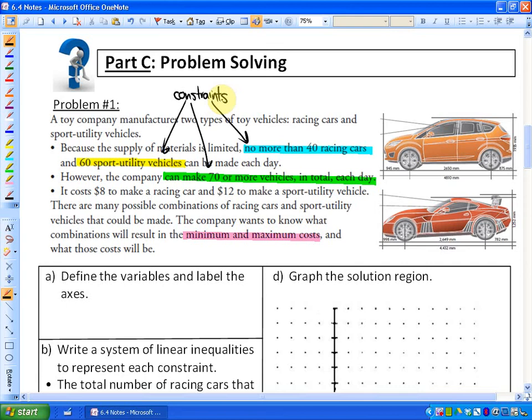It's a toy company who's making vehicles. There's no more than 40 racing cars. That's a constraint. There's no more than 60 sport utility vehicles. That's another constraint. And also the company can make 70 or more vehicles in a day. That's another constraint.